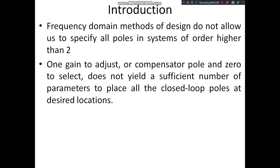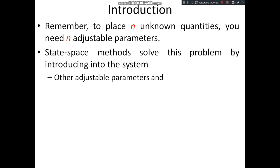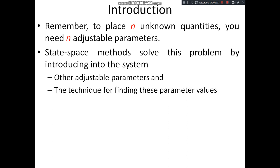The meaning is that by adjustment of only gain or the compensator pole and zero, it is not sufficient to place all the closed-loop poles at the desired location. Remember, to place n unknown quantities, you need n adjustable parameters. The state-space method solves this problem by introducing additional adjustable parameters into the system and providing the technique for finding these parameter values.